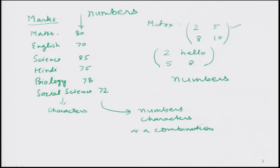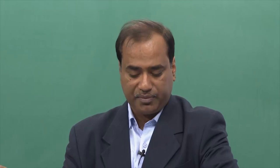In a matrix, all the entries are only numbers. When we deal with a list, the entries can be numbers, characters, or a combination of them. Whenever we do data analysis, there are situations where we need to input or output data in the form of a list. The advantage of a list is that it can hold all sorts of data — characters, numbers, or anything else — whereas vectors and matrices usually hold only numbers that can be used with mathematical operators.